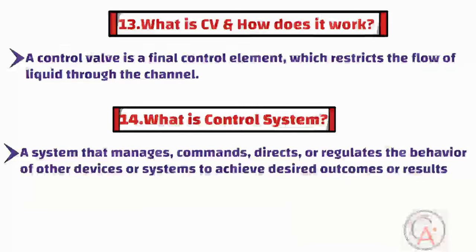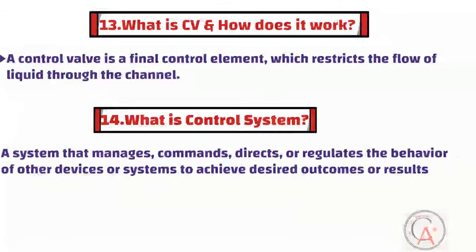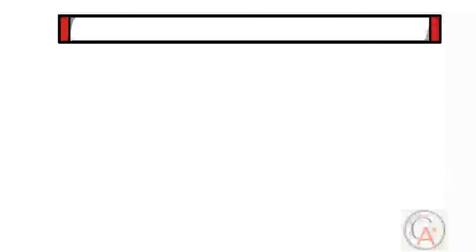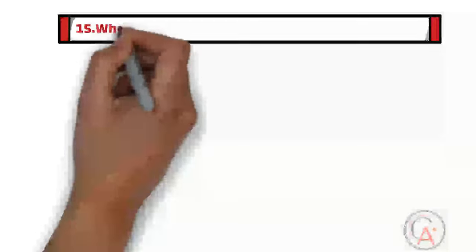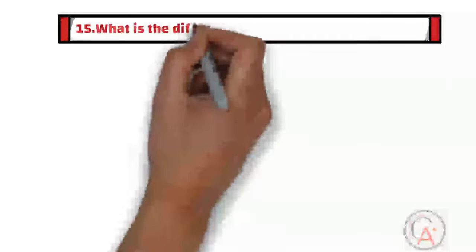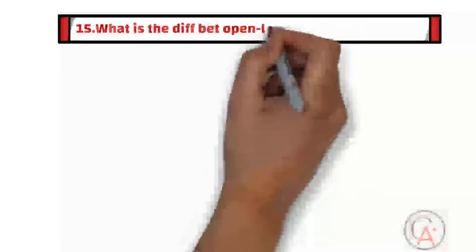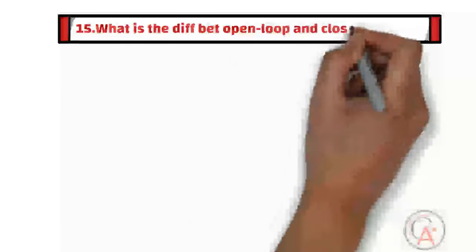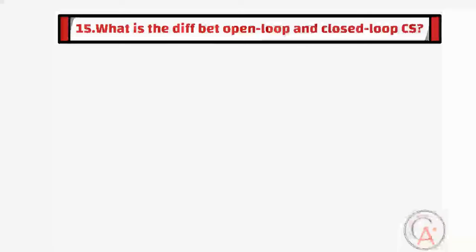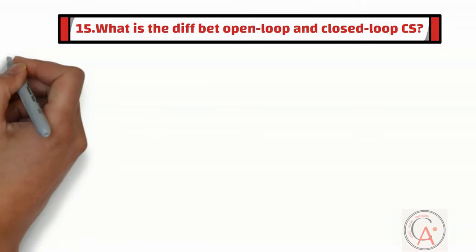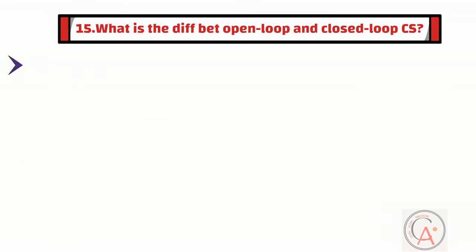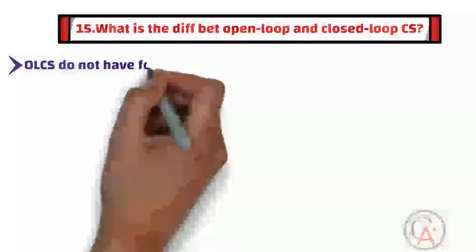The fifteenth question is: what is the difference between open-loop and closed-loop control systems? The main difference is that open-loop control systems do not have feedback, while all closed-loop control systems use feedback to adjust the control action.